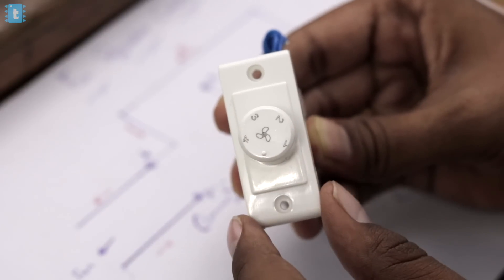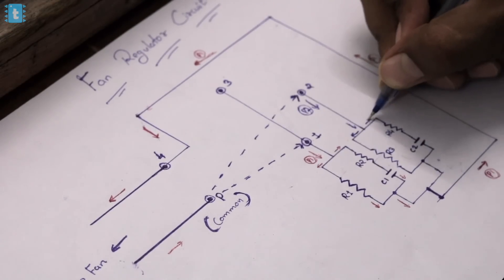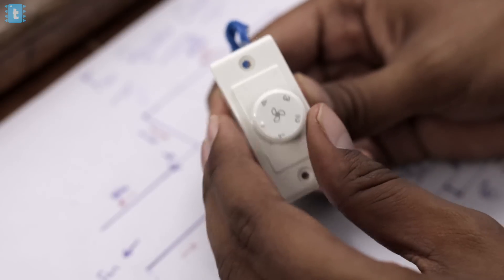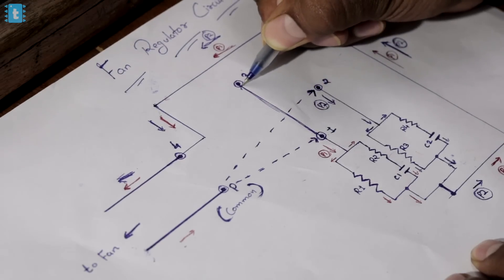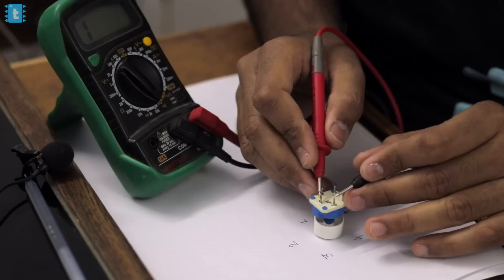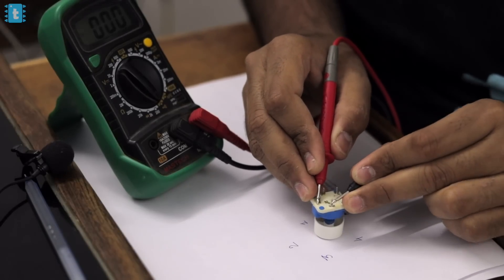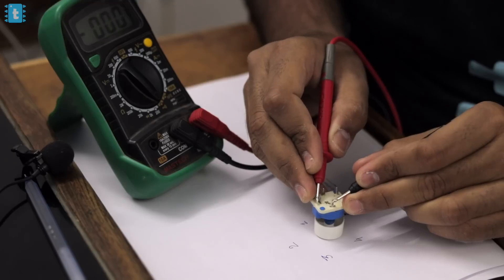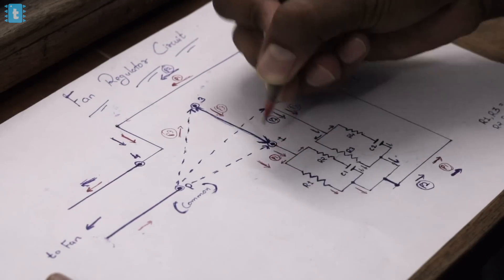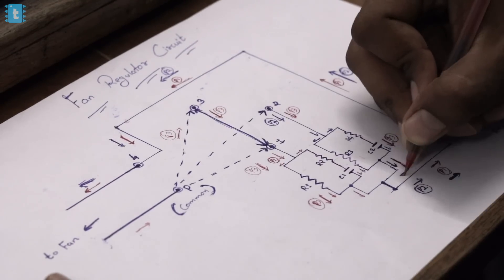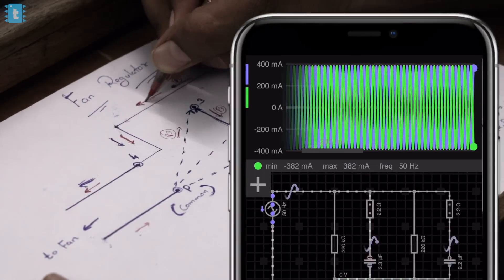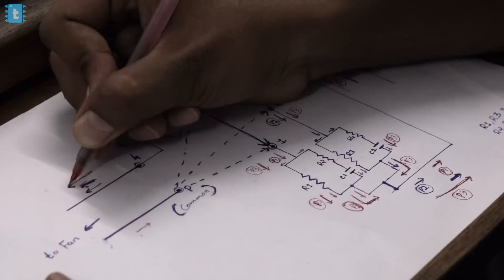When I switch the knob to speed 2, the current flows through a different path, and I found it is around 229 milliamperes. Now at the third position, terminal three connects to both terminal 3 and terminal 2 simultaneously, resulting in both RC circuits being connected in parallel. When I tested this in the simulation software, the current flowing was around 382 milliamperes — that's speed 3 of the fan.